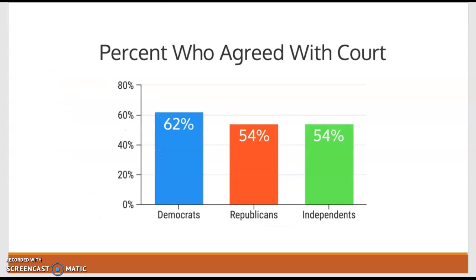This is a bar graph: percent who agreed with court. We've got Democrats, Republicans, independents. Without more information, if you're talking to all the people surveyed, 100% is all the people you talk to, so these three numbers should add up to 100%. But if you're saying 62% of Democrats agreed, then the graph needs to be changed. This does not show what they intend by the way it's presented. We have issues.